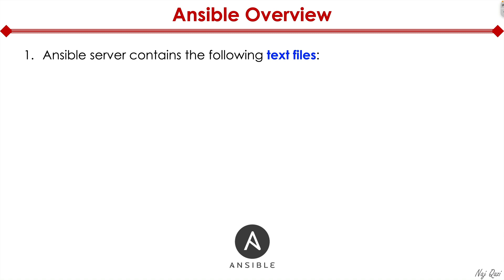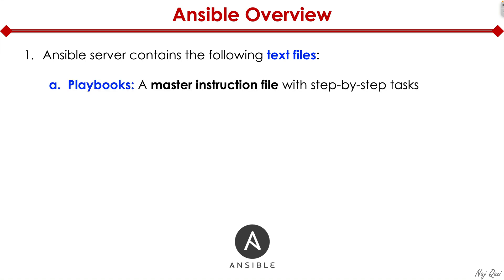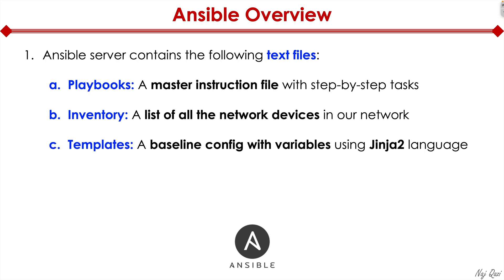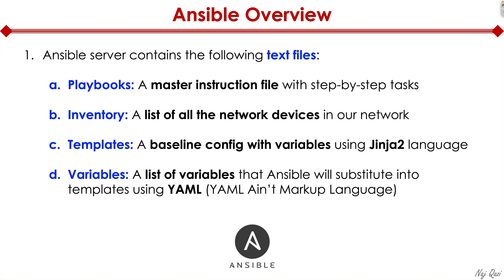Ansible server contains some text files. Once you're done installing the Ansible server, there are a couple of text files you need to be aware of. The first one is called playbooks — it's a master instruction file with step-by-step tasks. There's also an inventory file, which is a list of all the network devices in the network. Then there's templates, which is a baseline config with variables using Jinja 2 language. And finally, there's a variables file.